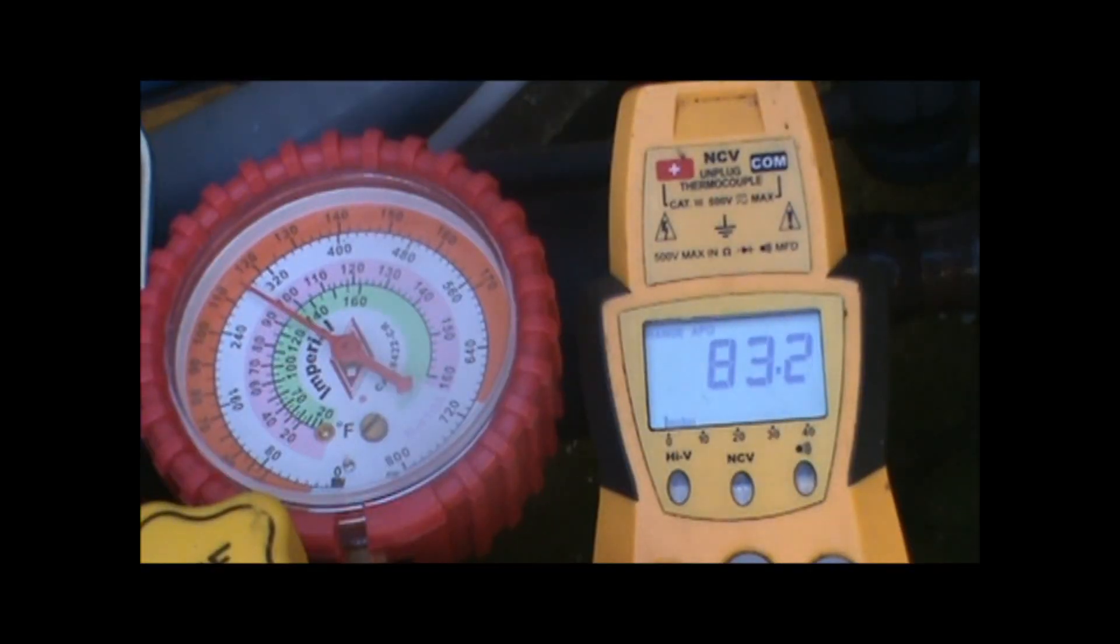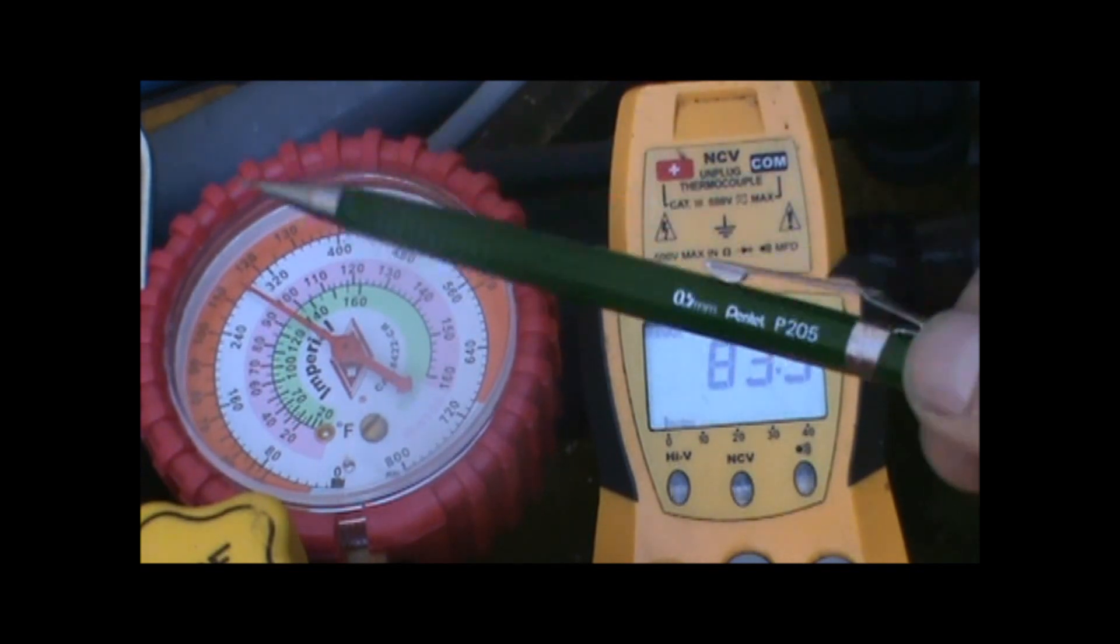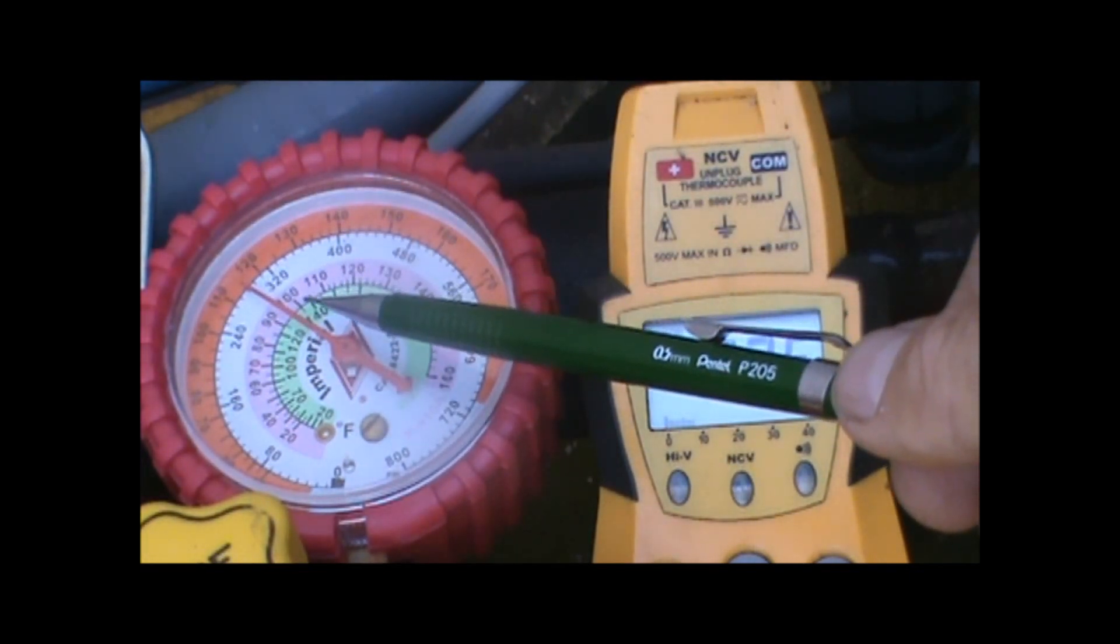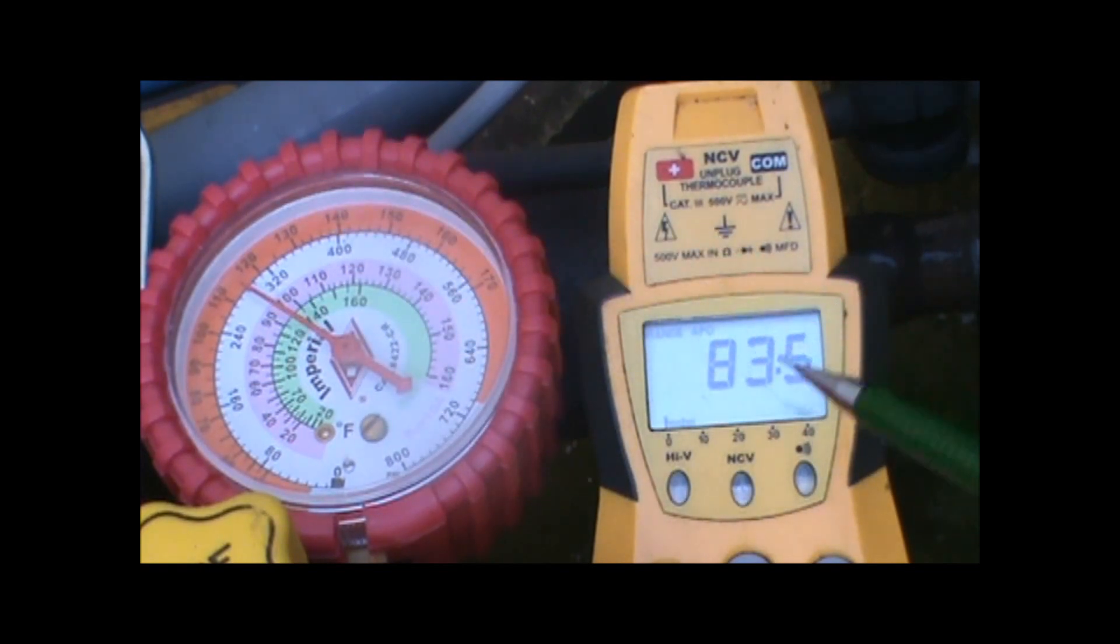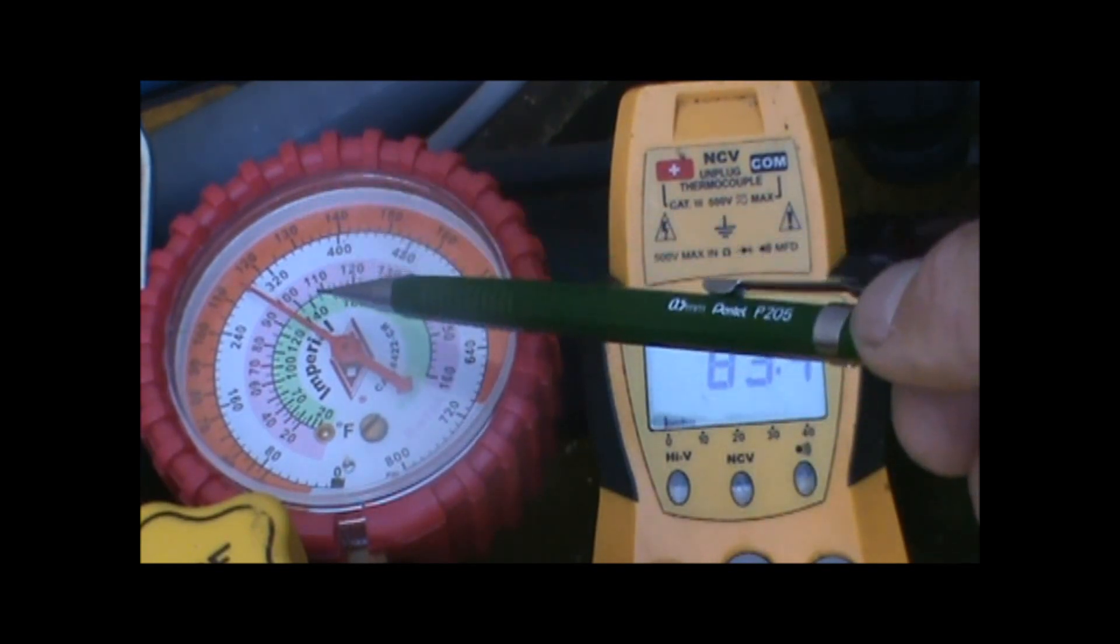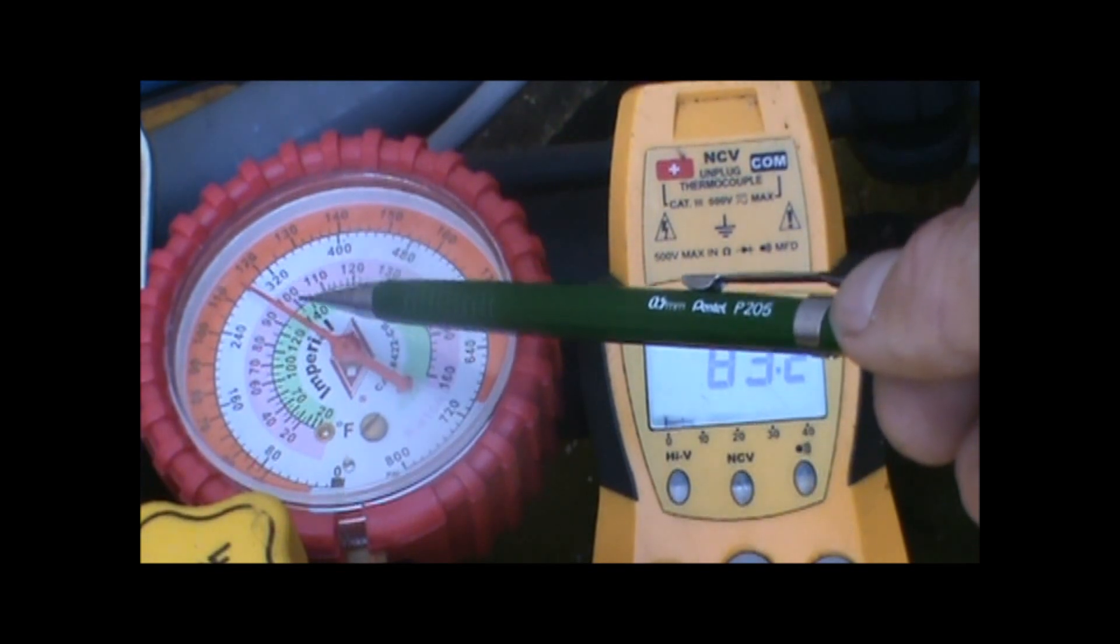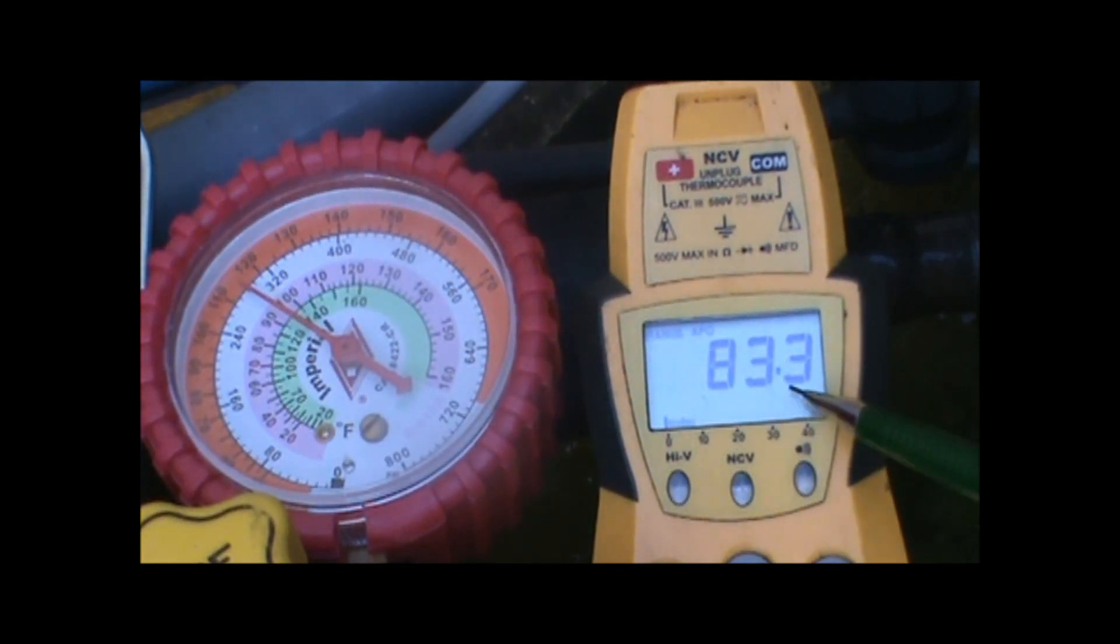The way that we measure our sub-cooling is by taking the saturation temperature as indicated by our gauge, which was 92-93 degrees, and from that we subtract the temperature of the refrigeration pipe, the high side line. So let's say that's 93 degrees minus 83 degrees, which gives us 10 degrees of sub-cooling.